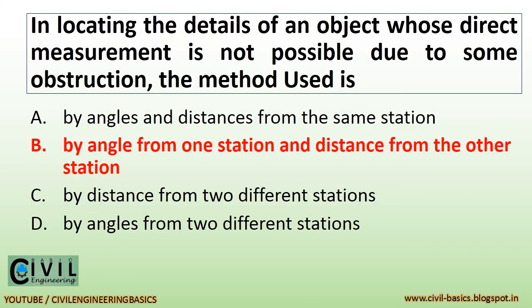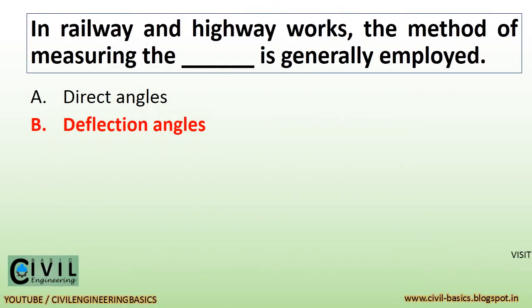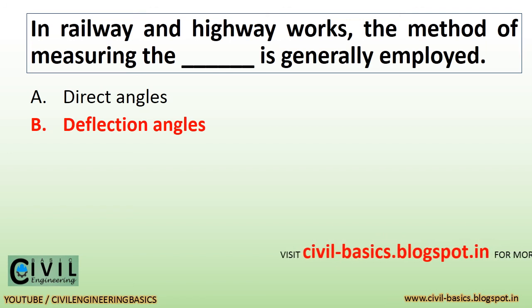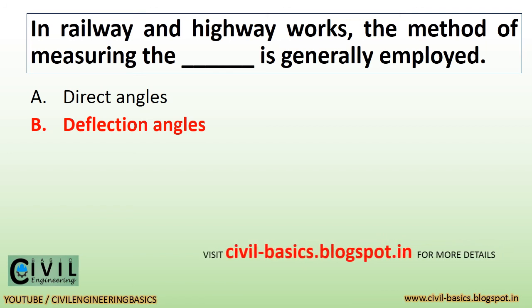In locating the details of an object whose direct measurement is not possible due to some obstruction, the method used is by angle from one station and distance from the other station. In railway and highway works, the method of measuring the deflection angles is generally employed.